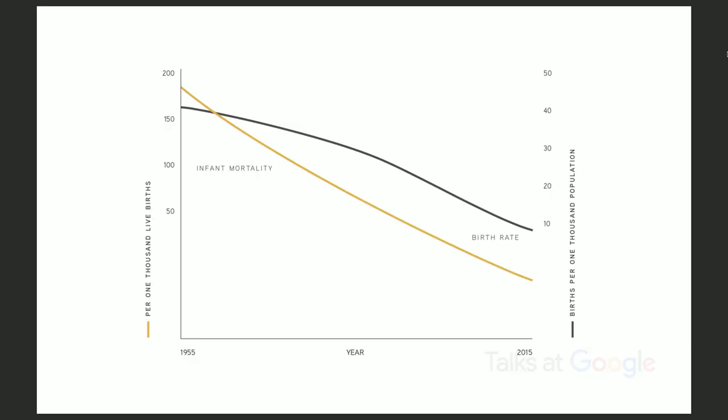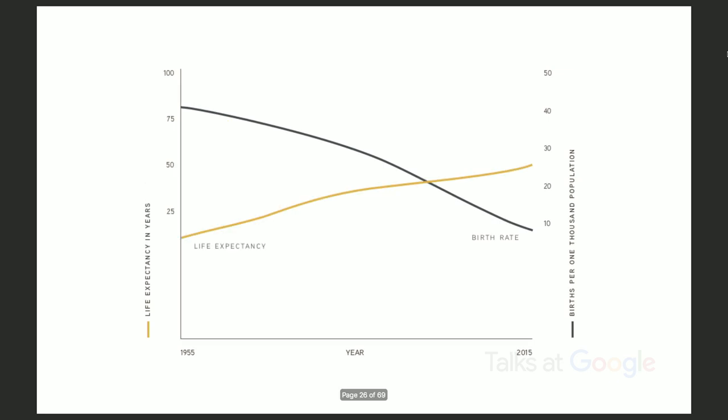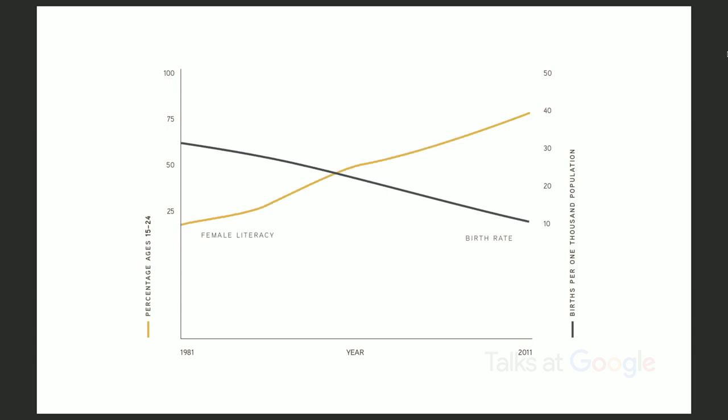Just a few quick slides. Infant mortality goes down, birth rate goes down. Life expectancy goes up, birth rate goes down. Female literacy goes up, birth rate goes down. These are all statistics from India.